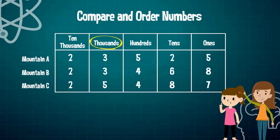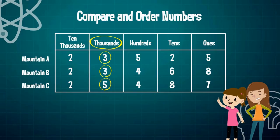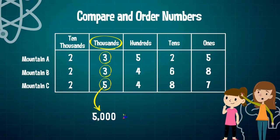In the thousands place we have in Mountain A a digit of three, we have in Mountain B a digit of three, and Mountain C we have a digit of five. Does this mean that the digit five has a value of five thousand? Yes, and since five thousand is greater than three thousand, this makes Mountain C our greatest height.